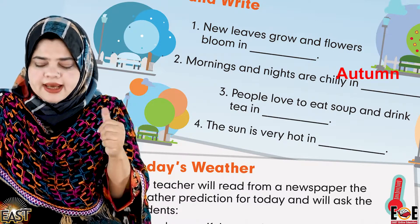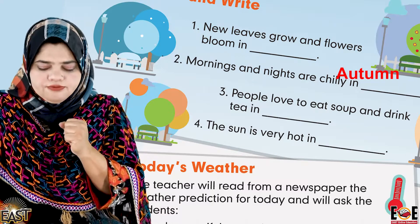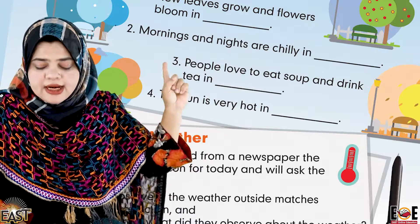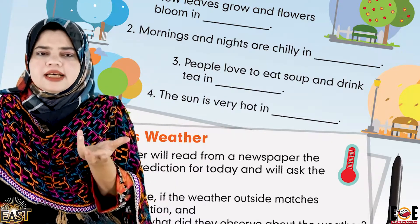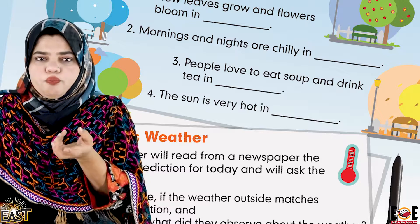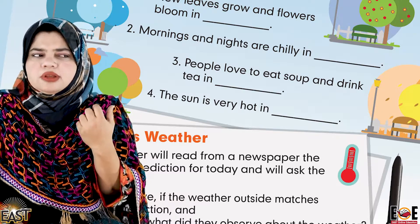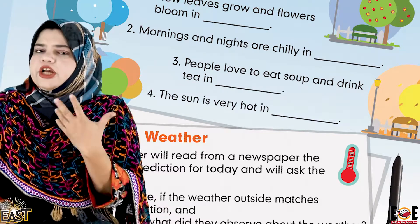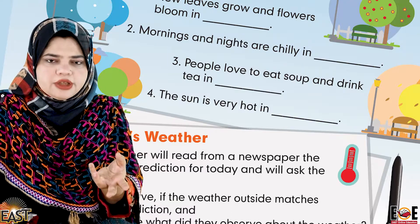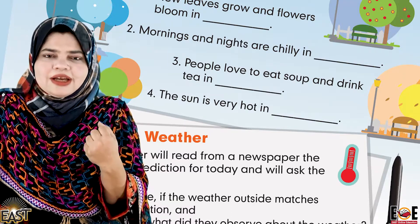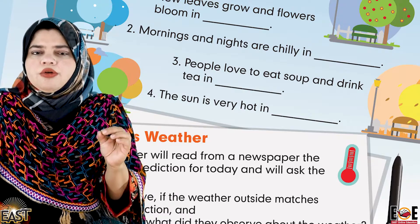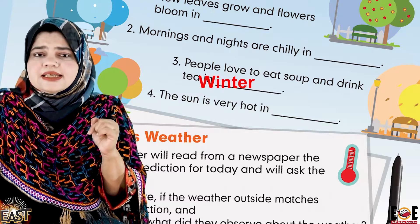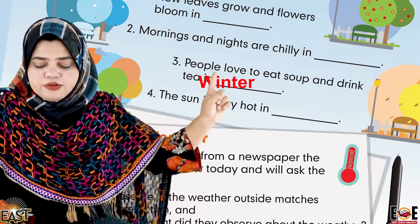Very good! 'People love to eat soup and drink tea in ___ season.' Kaunse season mein log chahte hain, pasand karte hain ke woh soup piyein, chai piyein? Garmiyon mein, summer season mein nahi bhai — us mein toh ice creams khane ko dil chahta hai, shakes peene ko dil chahta hai, juices peene ko dil chahta hai. Aur soup peene ko, chai peene ko zyada zyada chahta hai winter season mein! Very good! People love to eat soup and drink tea in winter.